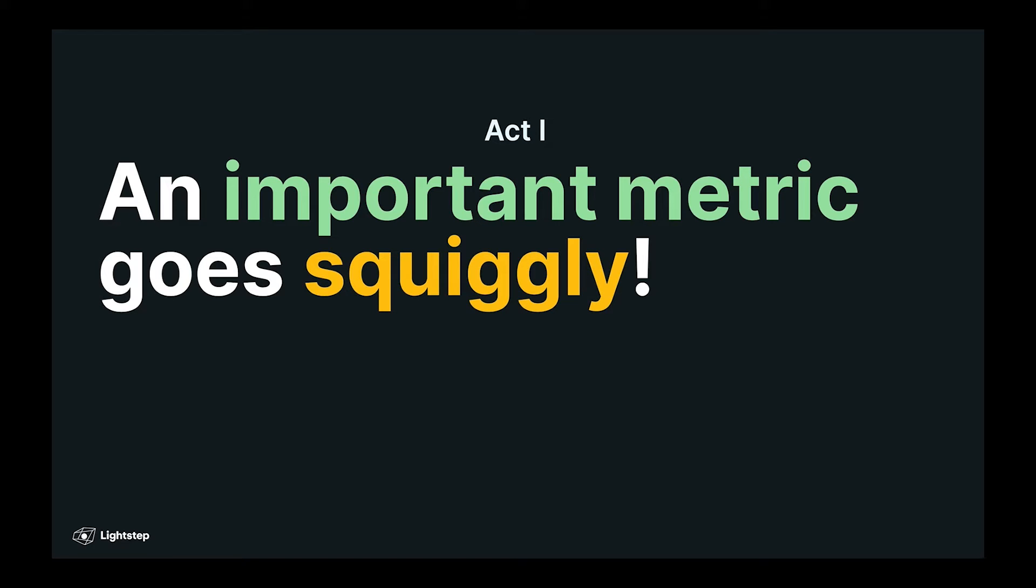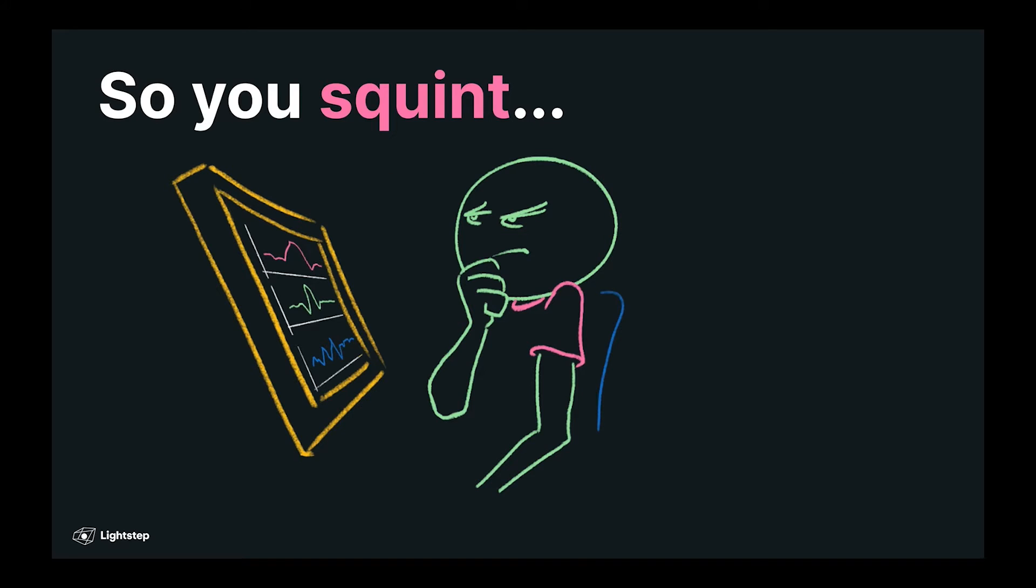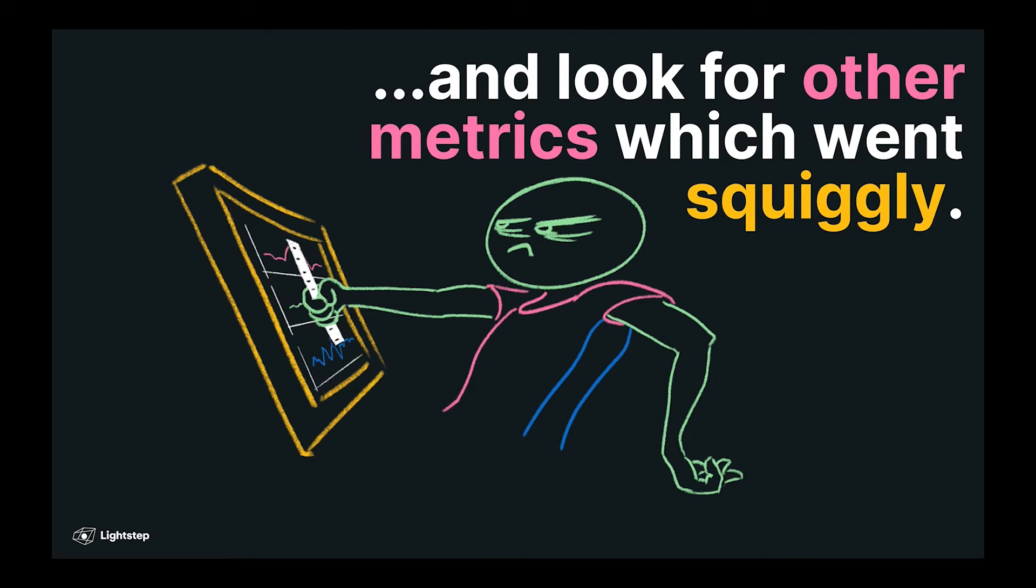you notice that an important metric has gone all squiggly. So you squint at your dashboard, then try to find other metrics that went squiggly at the same time. We've all done this. In the past, I've even used a ruler or a piece of paper to line my metrics up and see what was actually moving.